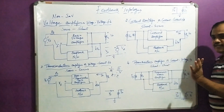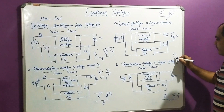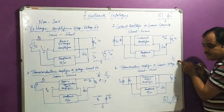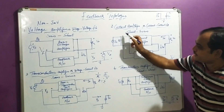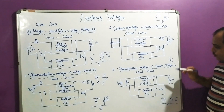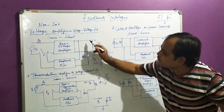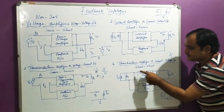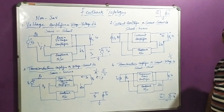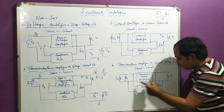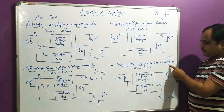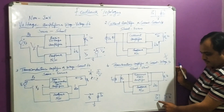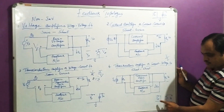The fourth one is the trans-resistance amplifier — transfer of resistance. Resistance means V by I, so output is voltage and input is current. At the input side, like in the current amplifier, it is shunt. And on the output side, output is voltage, so it is shunt again. These two shunt combinations are called shunt-shunt connection — hence the name shunt-shunt feedback trans-resistance amplifier, which is also called a current-to-voltage converter or current-to-voltage feedback structure. Since input is current and output is voltage, the equivalent circuit is a current-controlled voltage source (CCVS).